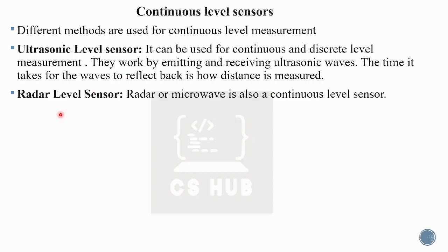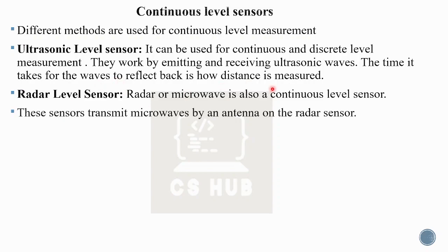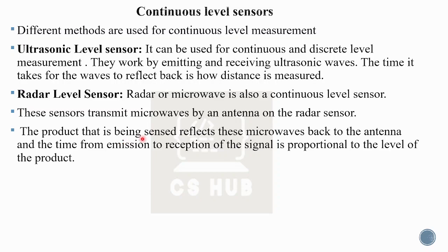Radar or microwave sensors are also continuous level sensors. They transmit microwaves via an antenna on the radar sensor. The product being measured reflects these microwaves back to the antenna, and the time from emission to reception of the signal is proportional to the level of the product.